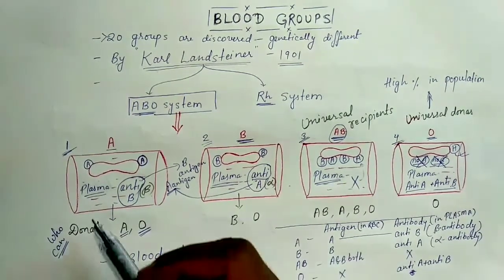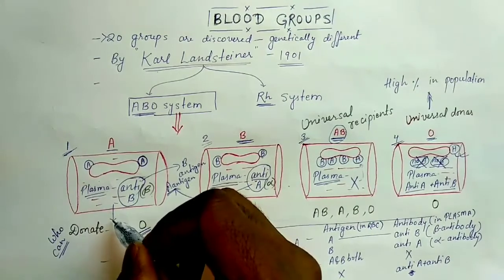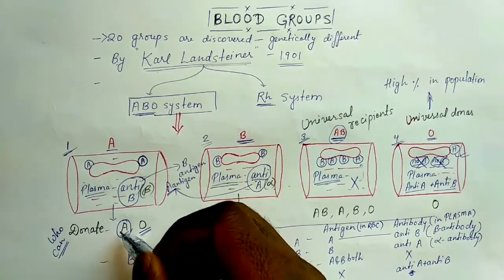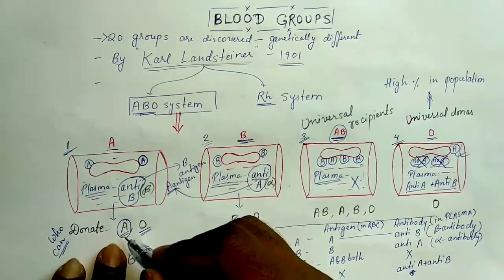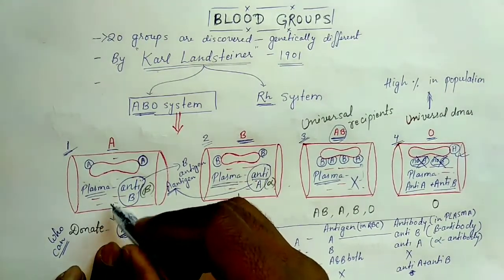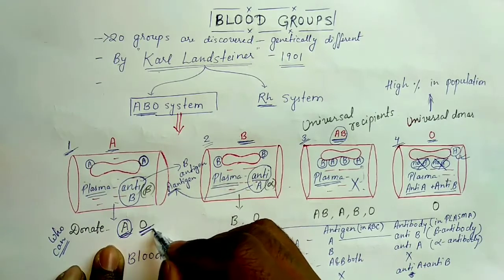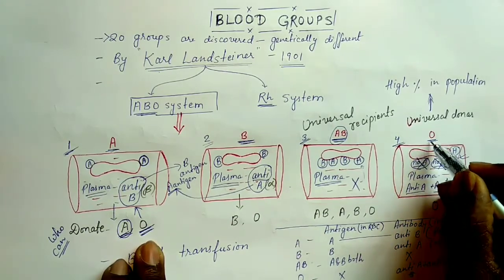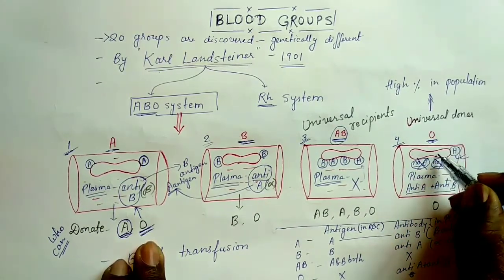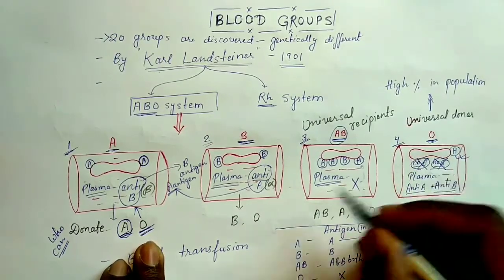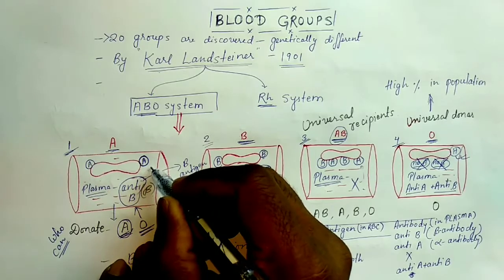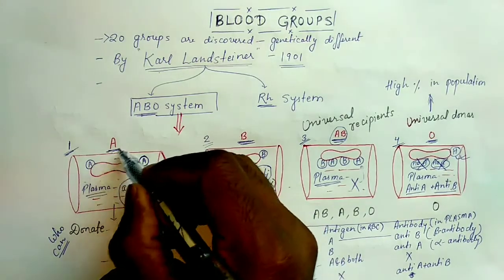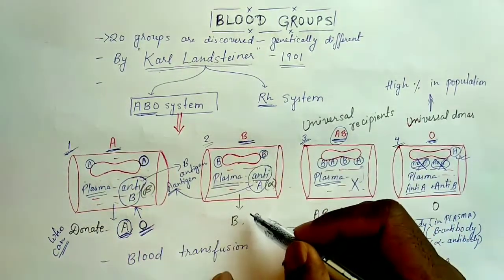In the plasma of the O blood group person, both anti-A and anti-B antibodies are present. Now, who can donate blood to a blood group A person? The same blood group A person can donate, but also an O blood group person can donate to A — because the RBC of the O blood group person has no antigen, so the antibody in the A person will not react with it. There will be no problem.